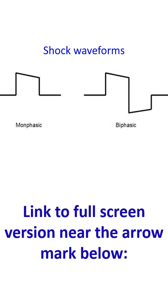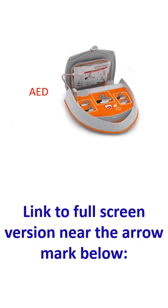The energy used in a biphasic device is 150 to 200 joules, while that in a monophasic device could be as high as 360 joules. Biphasic devices are more efficient than monophasic devices, which are being phased out. What are the other special types of defibrillators?